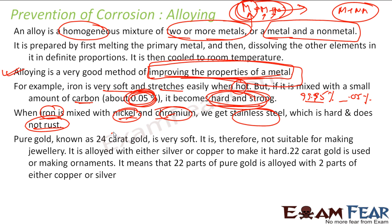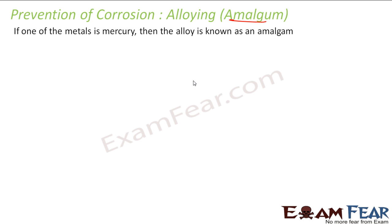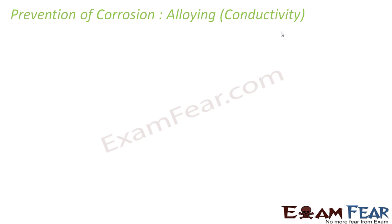Pure gold is 24 carat, which is very soft — you cannot even make ornaments from it as it can be broken by hand. So copper or silver is added to make it 22 carat, adding impurities to make the gold stronger so ornaments can be made. We also have a new term: amalgam. If an alloy has mercury in it, it is called an amalgam — even if just one component is mercury, that alloy is called an amalgam.